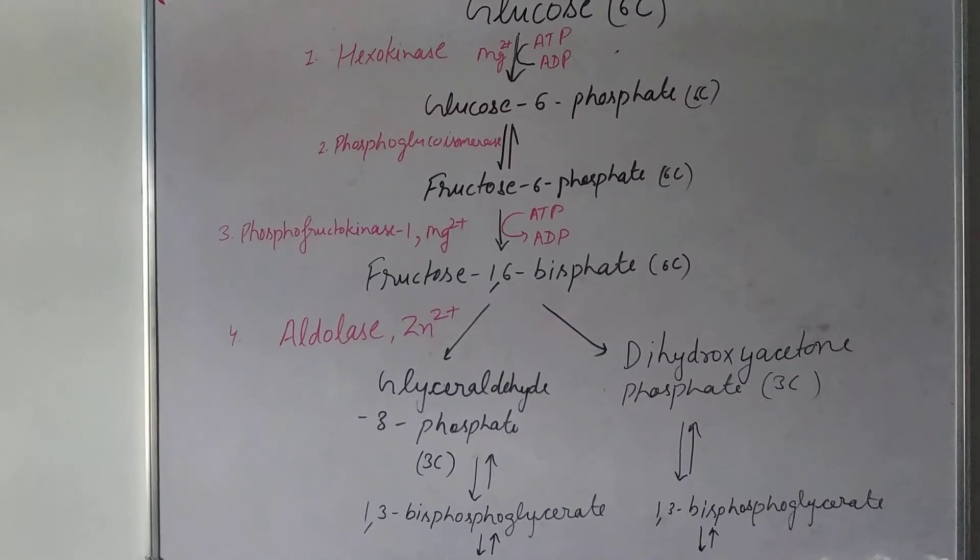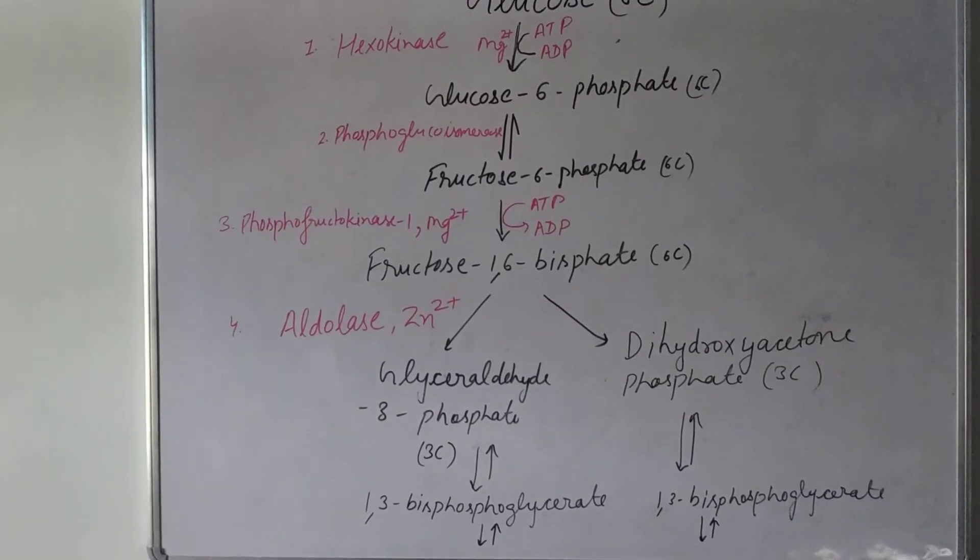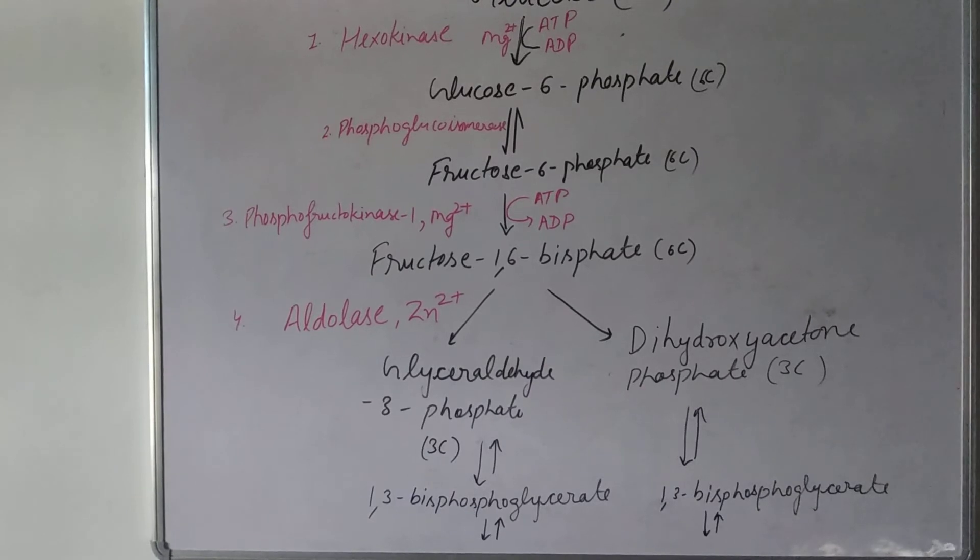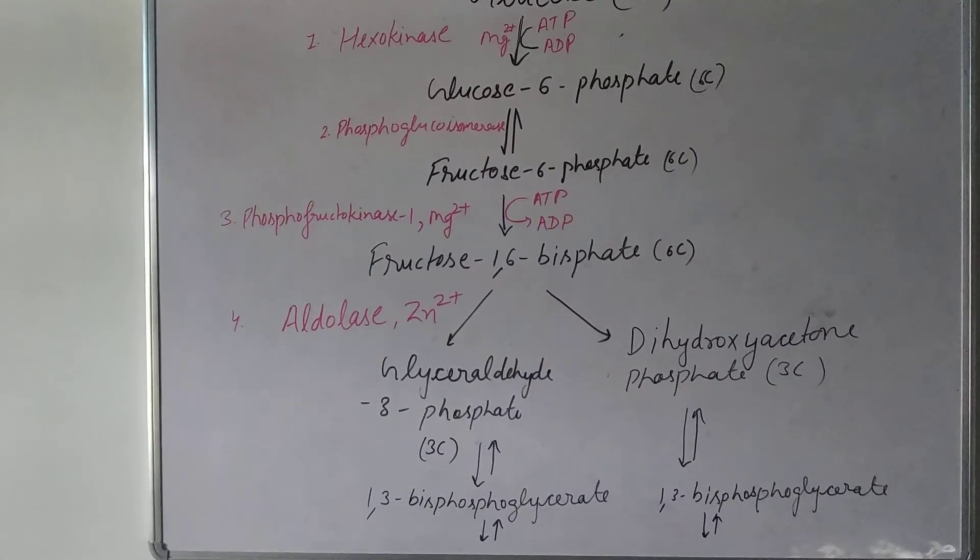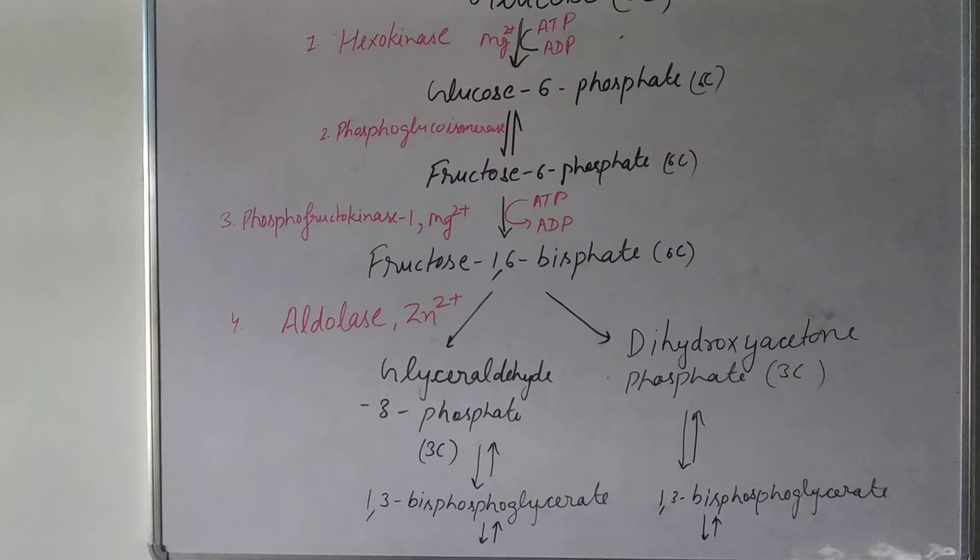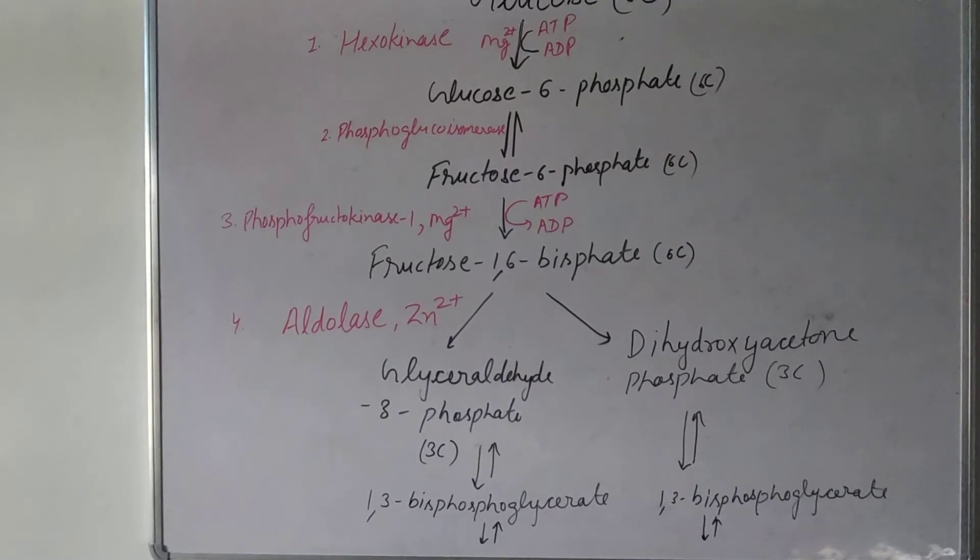The breakdown produces glyceraldehyde-3-phosphate and dihydroxyacetone phosphate using the aldolase enzyme.